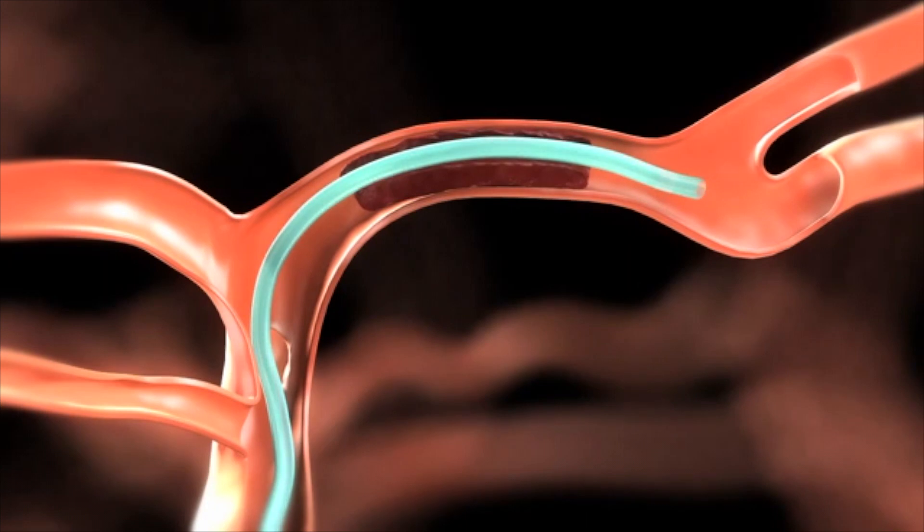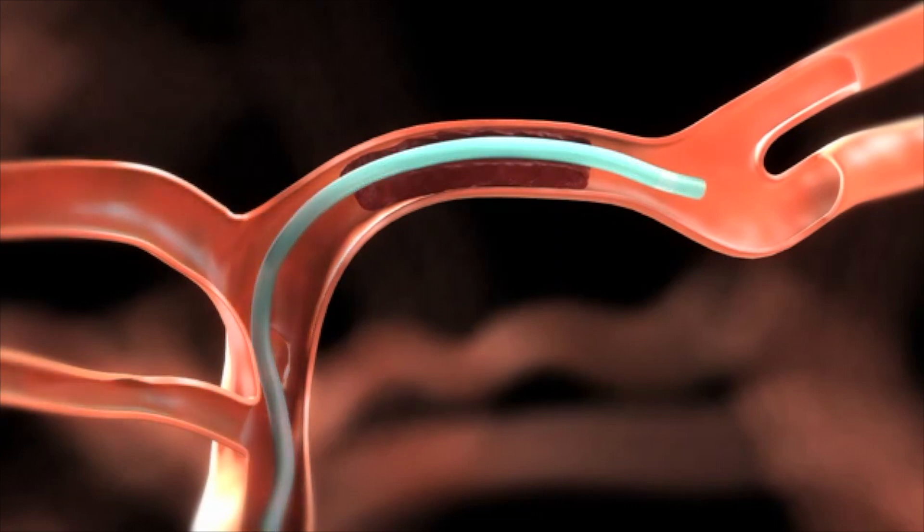With the aid of fluoroscopic imaging, carefully advance the solitaire FR until its distal markers line up at the end of the micro catheter. To deploy the solitaire FR, loosen the RHV, then carefully withdraw the micro catheter while holding the solitaire FR in place until the micro catheter tip covers only the proximal marker of the device.